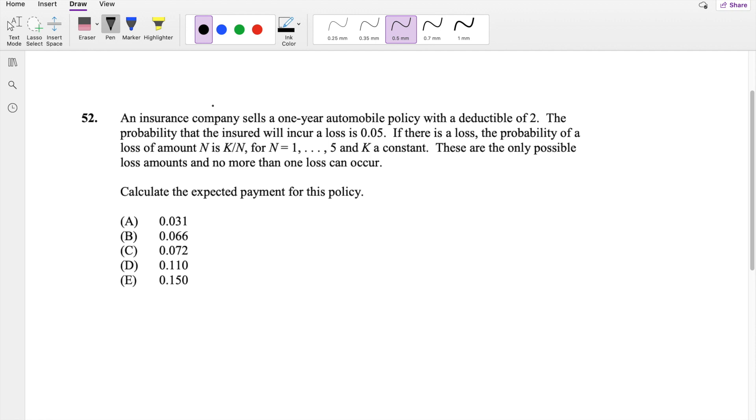This insurance policy I'm going to denote as X has a deductible of 2. So that means Y, which is the payment, is equal to X minus 2. The probability that the insured will incur a loss is 0.05. So 0.05 times this whole thing if there's a loss.